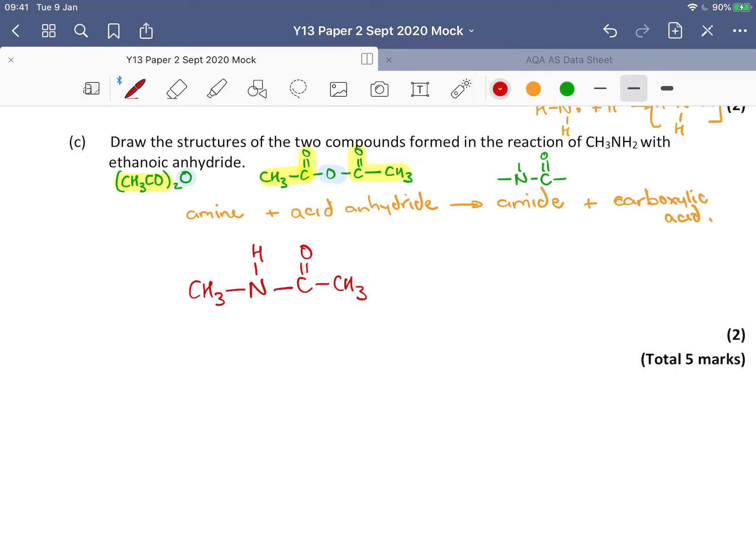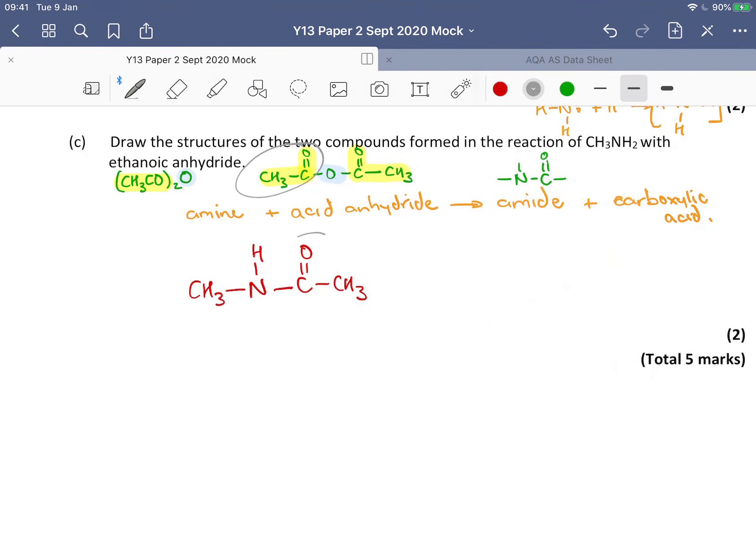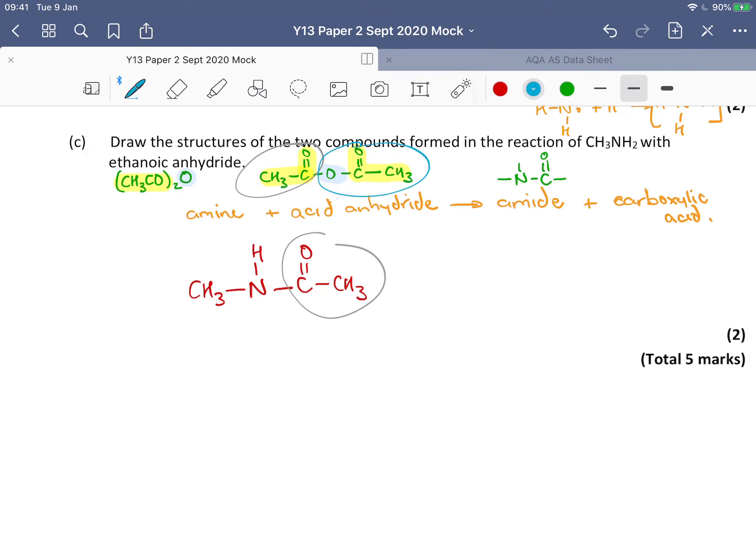And then the carboxylic acid is going to be from the other half of the acid anhydride. So this is that part, yeah. And then if we think about another part of it, that's what we've got left. That's going to be forming the carboxylic acid. So that is our other structure.